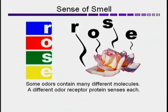So we need four different types of odor receptor proteins, with R-, O-, S-, and E-shaped indentations. So even though a fly has only 40 types of odor receptor neurons, it can sense thousands of smells because of different combinations of odor receptor proteins sensing different molecules.